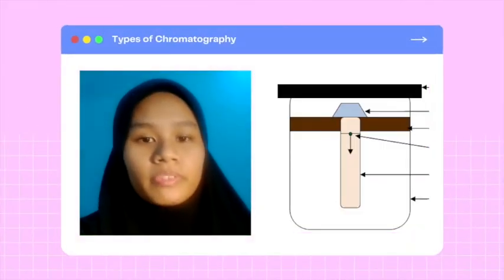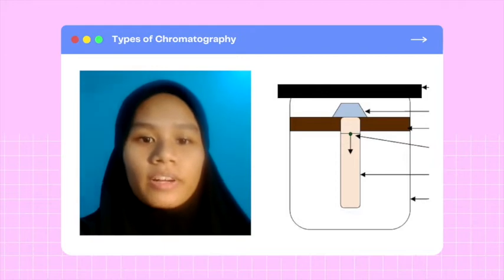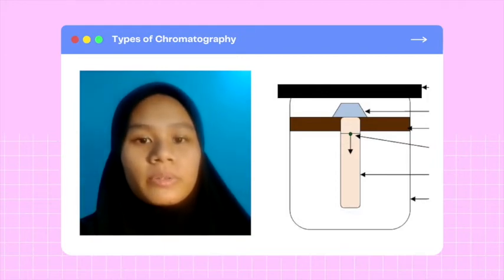So, what Putera previously presented was an example of the ascending type. We have four other types which are the descending, ascending-descending, radial, and two-dimensional paper chromatography. The descending technique is a complex setup. This is built due to its time-consuming ability. This develops along the gravity.